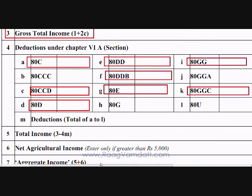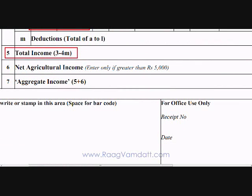Subtract the amount in box 4M from the amount in box 3 and put it in box 5 — this is your total income for the year. If you have any income from agriculture or farming that is more than Rs 5,000, put it in box 6. Although there is no income tax on agricultural income, it is included here for the purpose of determining the correct tax slabs for your income. Add the amounts from boxes 5 and 6 and put them in box 7 — this gives us your aggregate income. Don't write anything below this; move on to the next page.